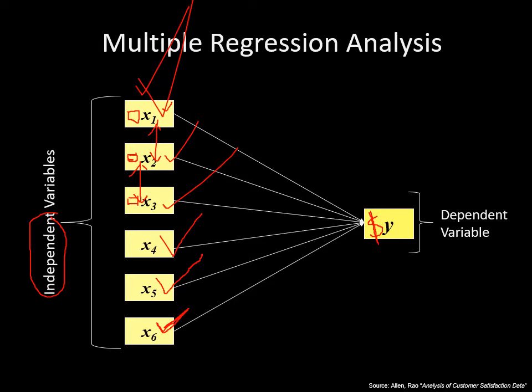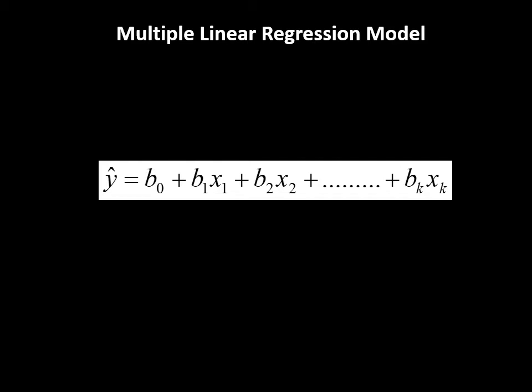Multiple linear regression extends simple linear regression by adding more independent variables: Y-hat equals B0 plus B1X1 plus B2X2 plus ... plus BkXk, where k is the number of independent variables. Each B coefficient is the slope for its corresponding X variable.